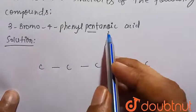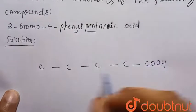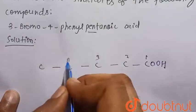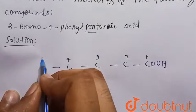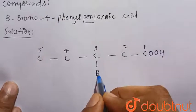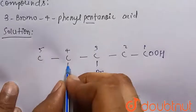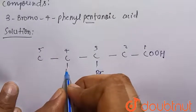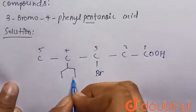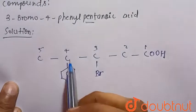Pentanoic acid means it has a carboxylic acid group, so this is the COOH group. 3-bromo means bromine is present at carbon number 3, numbering as 1, 2, 3, 4, 5. And 4-phenyl means the phenyl group is attached at carbon number 4.